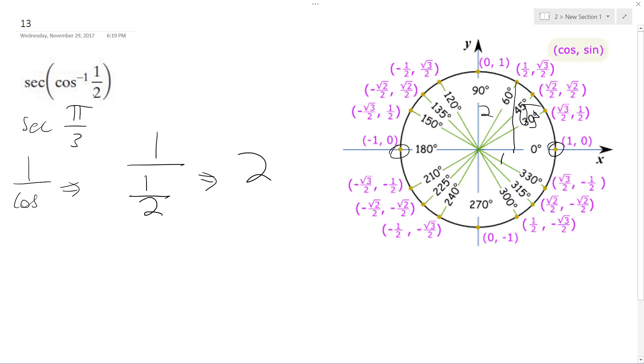So basically you took the inverse of the cosine, and then you take one over cosine of what that is, and that's how you got two. Okay, I hope that helps. Thanks for watching.